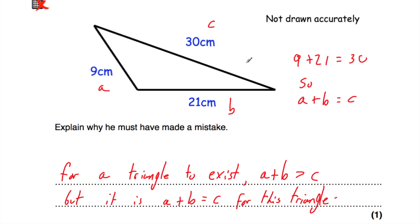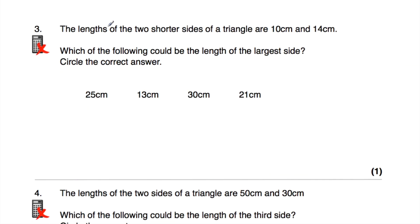9 plus 21 is equal to 30. So A plus B equals C. But for a triangle to exist, A plus B must be greater than C. So this triangle can't exist — Caden must have made a mistake. Now question number three says: the lengths of the two shorter sides of a triangle are 10cm and 14cm. Which of the following could be the length of the largest side? The options are 25cm, 13cm, 30cm, and 21cm.